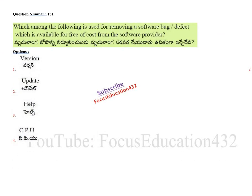First question: which among the following is used for removing a software bug or defect, which is available free of cost from the software provider? Software provider means from where we purchase the software — for example, if we purchase software from Microsoft, they will give some facility free of cost so that we can remove the software bug or some defects in the existing software.